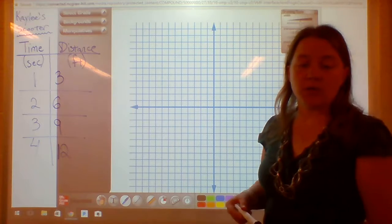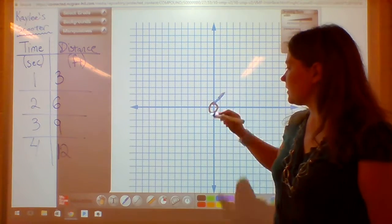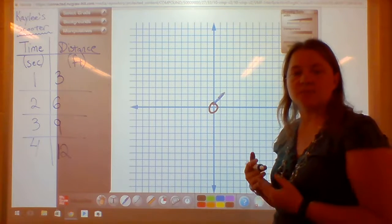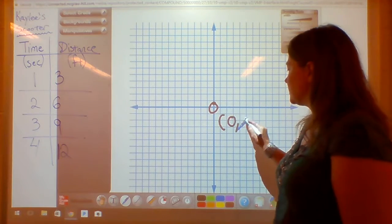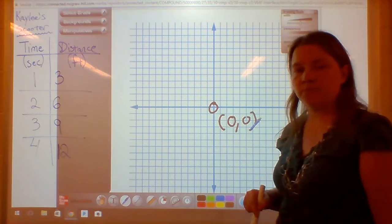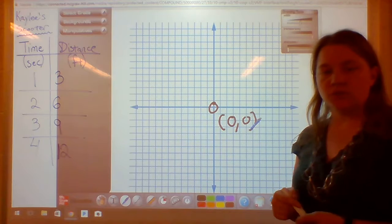And what we also have is the origin. And the origin is where the two axes meet. And the origin is always the ordered pair zero, zero. And what that zero, zero means is that you don't run anywhere and you don't jump anywhere.